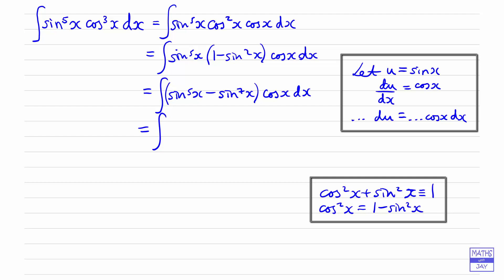So sine x all to the power of 5 is just u to the power of 5. Similarly, we've got u to the power of 7 here. And then cos x dx is du. So nice and easy to integrate. We're going to have u to the power of 6 over 6, u to the power of 8 over 8, and of course our constant of integration.